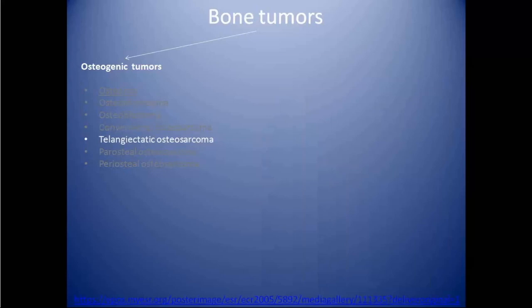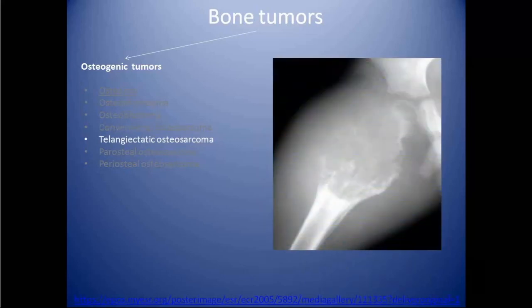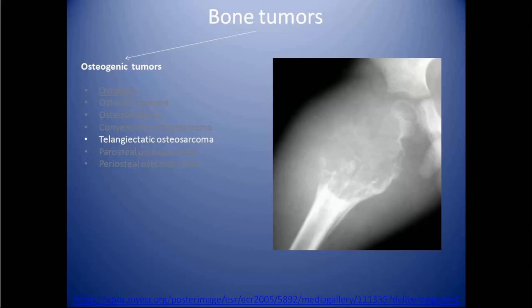Next is telangiectatic osteosarcoma, which is an uncommon variant of osteosarcoma seen in adolescent and young adult populations. It is characterized by the presence of large blood-filled spaces separated by bony septa, and is most commonly seen around the knee joint. Because of the presence of blood-filled spaces, it can show fluid-fluid levels on MRI, which can mimic an aneurysmal bone cyst.